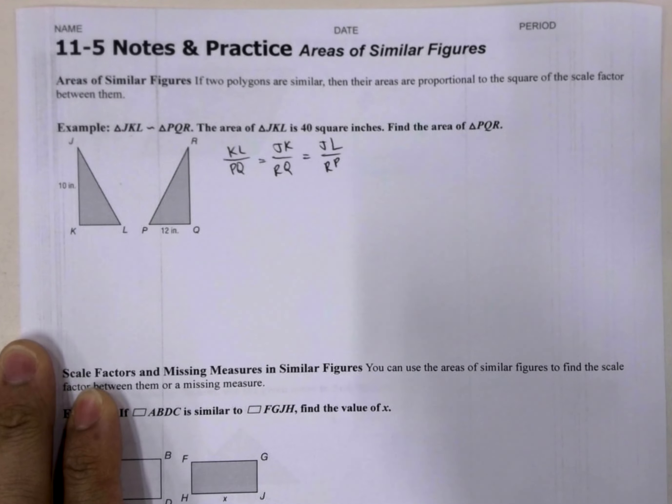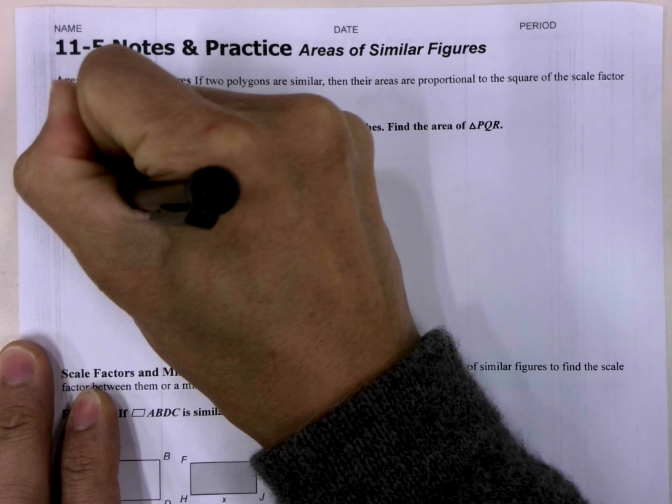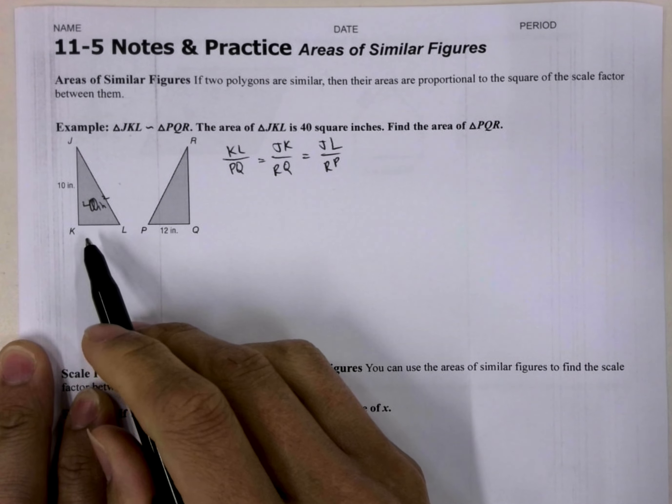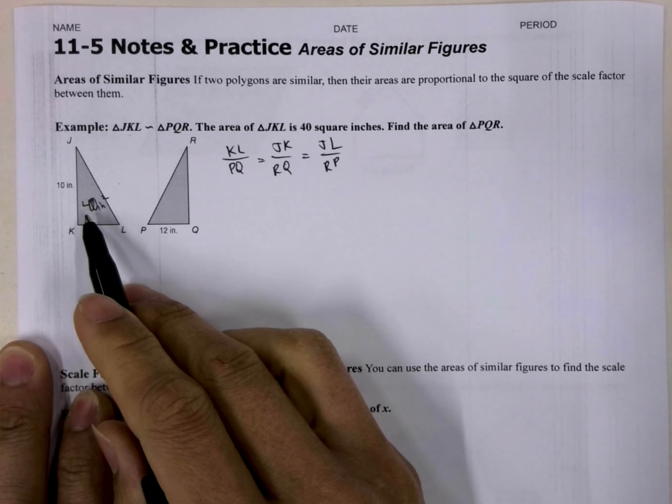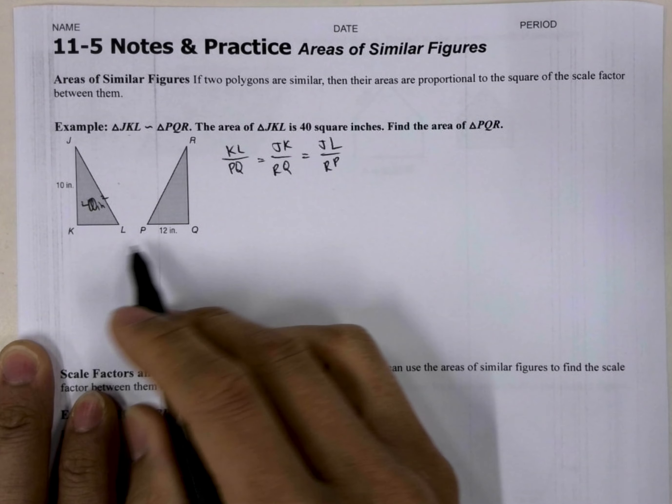So we're given that the area of JKL is 40 square inches, so 40 inches squared. And so if that's true, then how can we solve this problem? Well, first we need to get the scale factor of the two triangles.